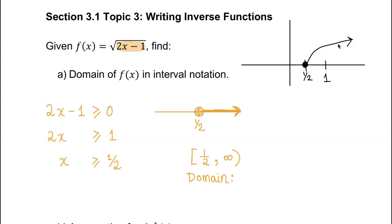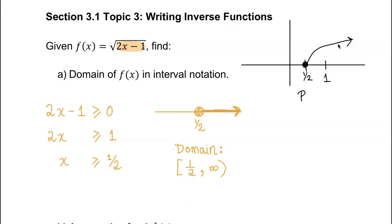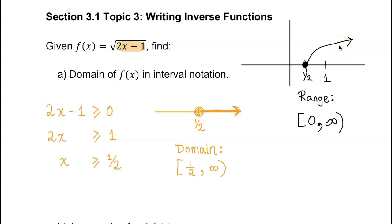Now let's talk about the range of this square root function. When we plug in the smallest possible value of one-half, we get 0 — that's the smallest y-value. Since the graph increases from there, the range goes from 0 to positive infinity. I'm writing this down now even though nobody asked for it, because it will be very helpful when we find the domain of the inverse function.